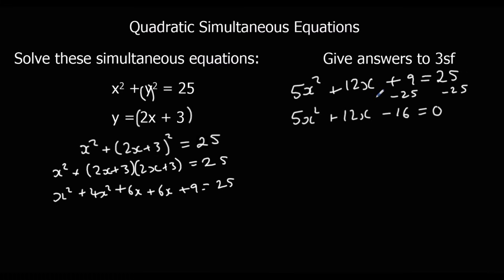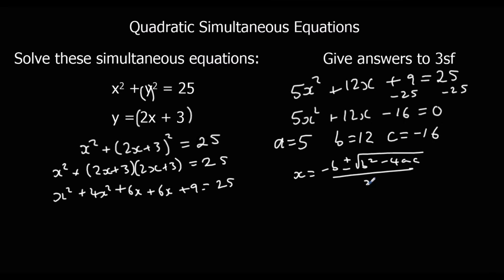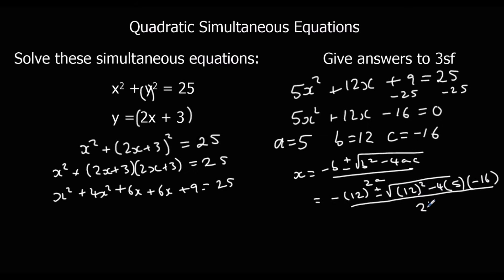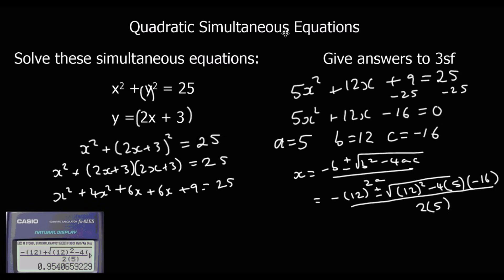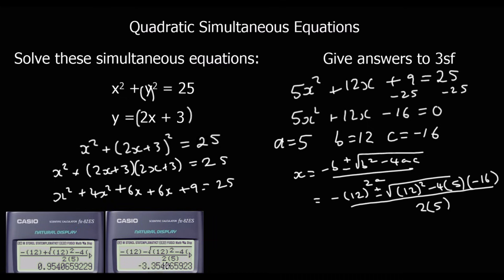We can't factorize this — we're giving the answer to three significant figures. So a equals 5, b equals 12, c equals minus 16, and these go into the quadratic formula. Substituting in: it's minus 12 plus or minus the square root of 12 squared minus 4 times 5 times minus 16, all over 2 times 5. With the plus we get x equals 0.954, and with the minus we get x equals minus 3.35, both to three significant figures.